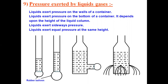First, let's see how pressure is exerted by liquids. In the first figure we can see that liquid exerts pressure on the walls of the container. In the second figure we can see that liquid exerts pressure on the bottom of a container, and it depends upon the height of the liquid column.